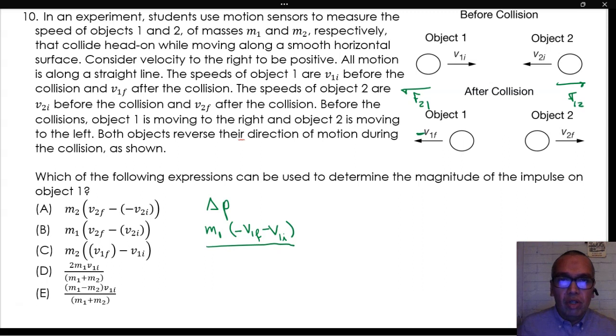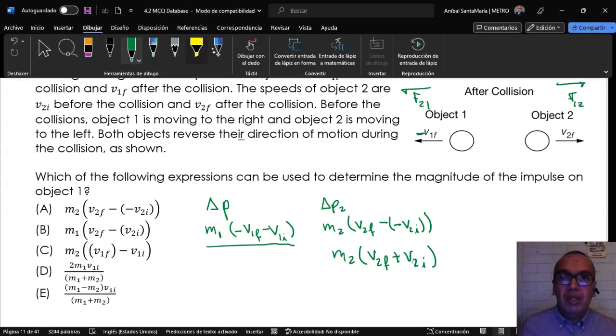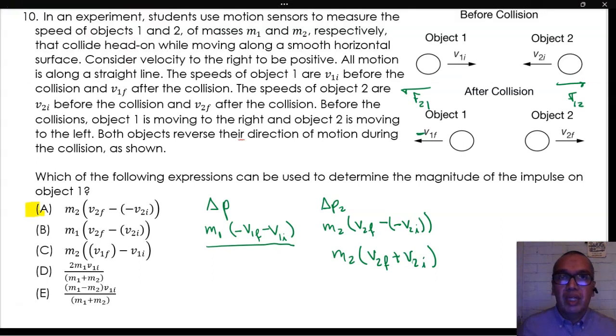The impulse on object 2 is m2 times v2f minus negative v2i, where once again the negative sign is added due to the direction. Since this answer in option A is the only reasonable one, we choose this one for the magnitude of the impulse on object 1.